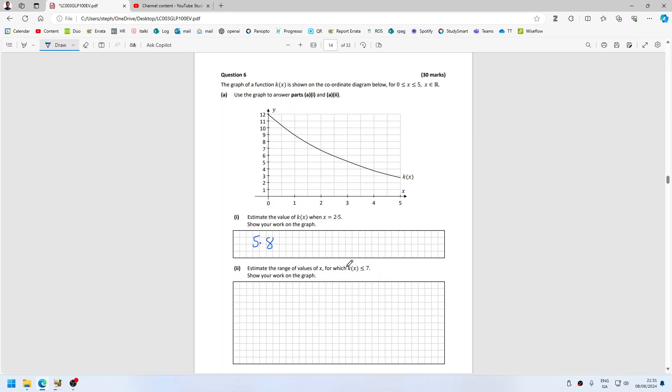Estimate the range of values of x for which the k function is less than or equal to 7. Okay, so if I just try... So it hits 7 first here at about 1.8.